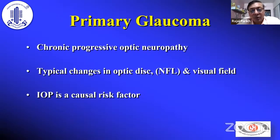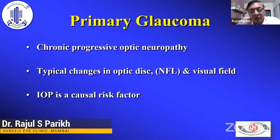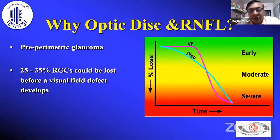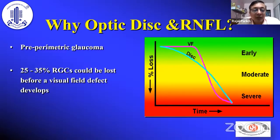We know that glaucoma is a progressive optic neuropathy — basically changes in the optic disc and nerve fiber layer with correlating visual field, where IOP is the causal risk factor. If you look at the literature, optic disc and RNFL defect changes usually happen before perimetry defects are picked up on white-on-white perimetry. Some studies have shown that 20 to 30% of ganglion cell loss occurs before white-on-white perimetry picks up the defect. So imaging has a definite role in picking up early disease.